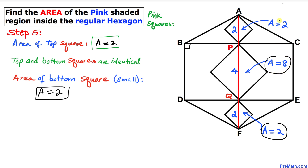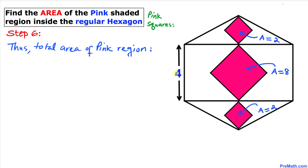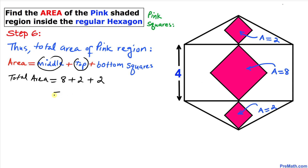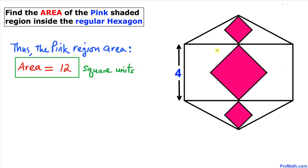The bottom square has area 2, the middle square has area 8, and the top square has area 2. The total area of the pink region is the combined area of all three squares: 8 plus 2 plus 2 equals 12. So the total area of the pink shaded region turns out to be 12 square units.